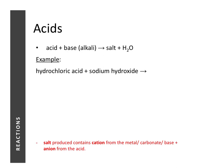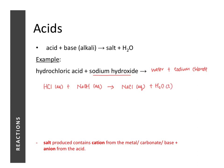Here is another example using an alkali instead of a base. Hydrochloric acid plus sodium hydroxide produces water and sodium chloride. The balanced chemical equation is: HCl(aq) + NaOH(aq) → NaCl(aq) + H₂O(l). This equation is already balanced.